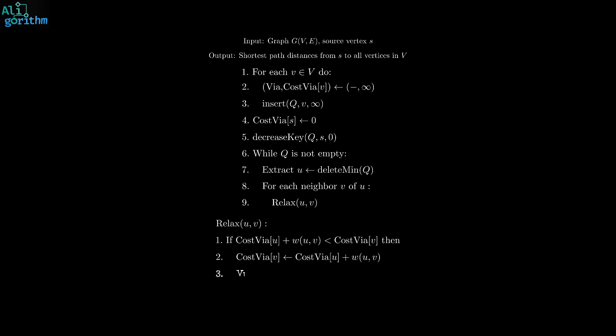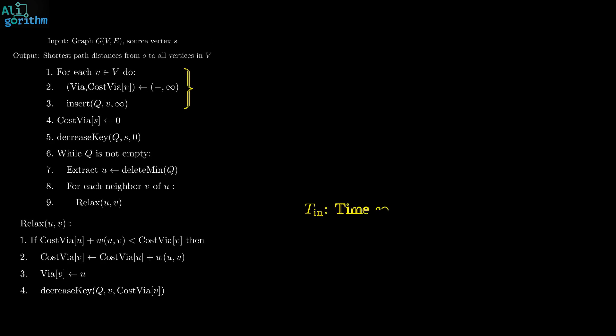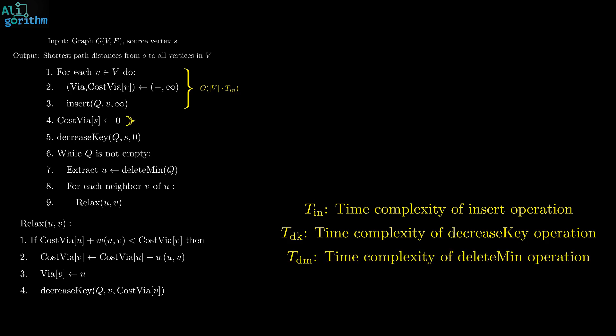Now let's discuss the complexity of the algorithm. First, let Tin, Tdk, and Tdm be the time complexity of insert, decrease key, and delete min operations from the heap, respectively. In the initialization step, we insert every vertex of the graph into the heap. This takes O of V times Tin time, where V is the number of vertices. Now in the main loop, every vertex is extracted from the heap exactly once, taking O of V times Tdm time. Also, each edge is relaxed, taking O of E times Tdk time, where E is the number of edges.